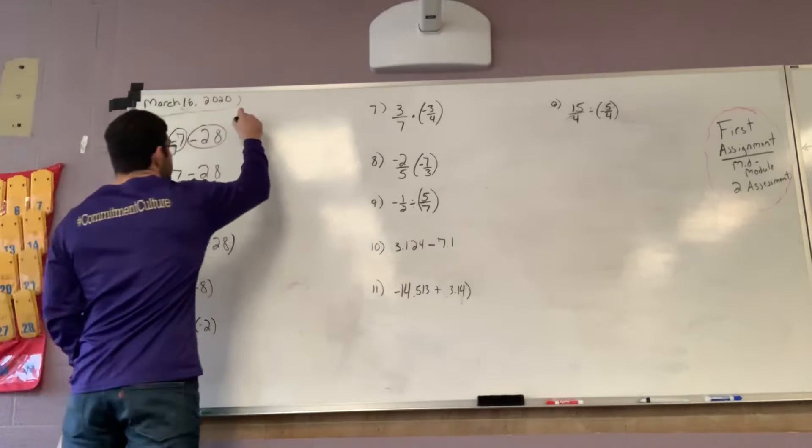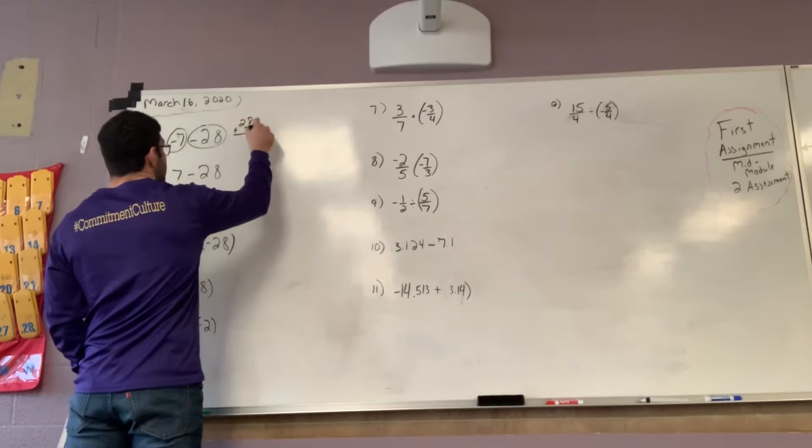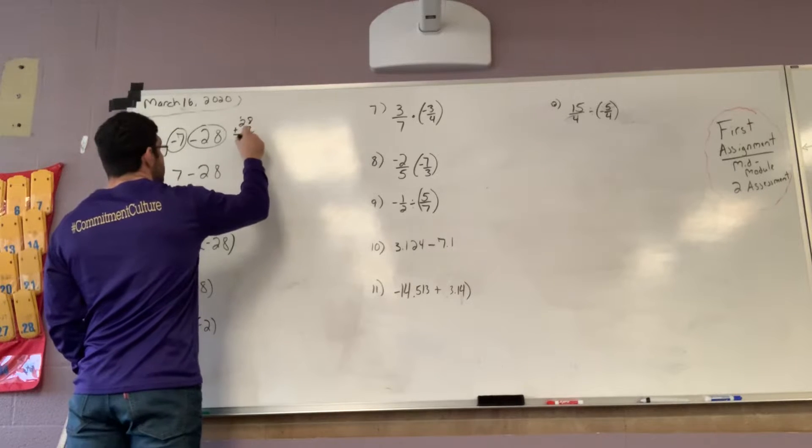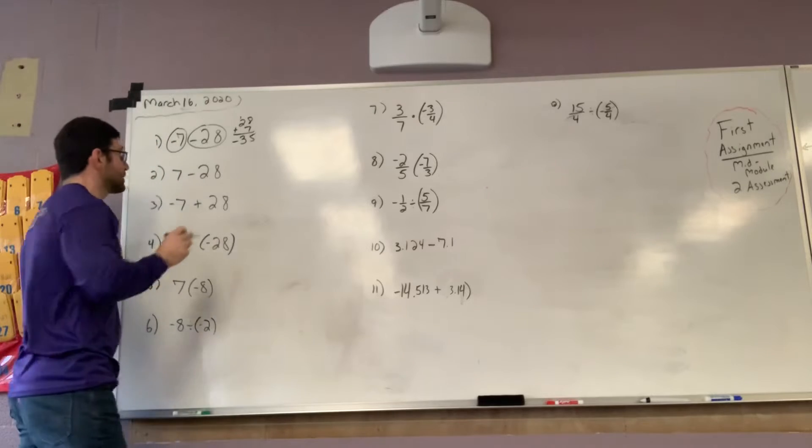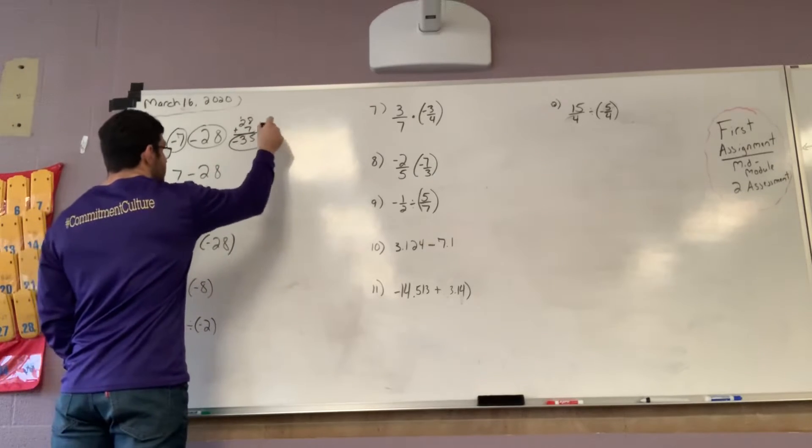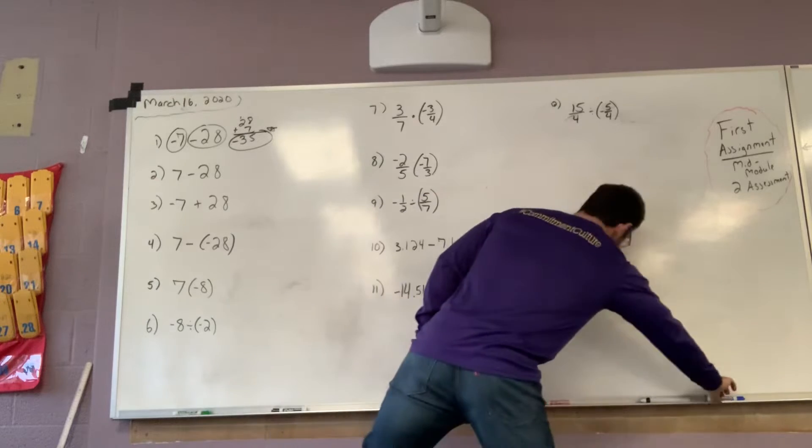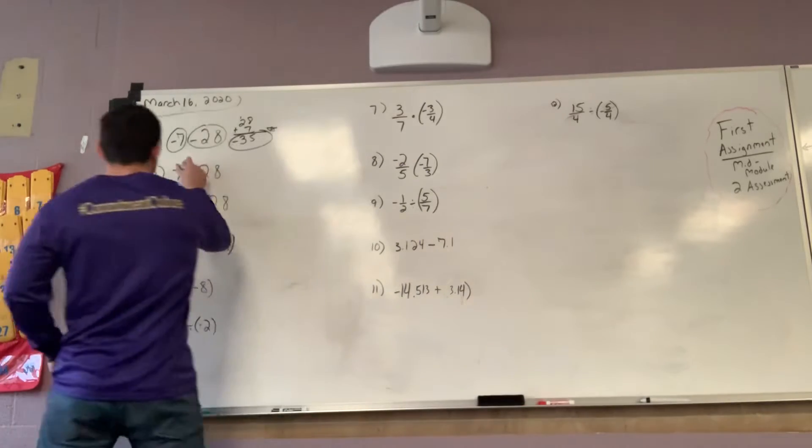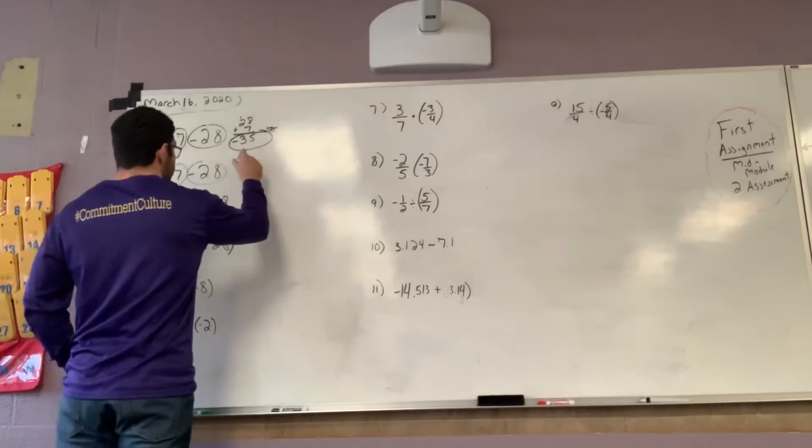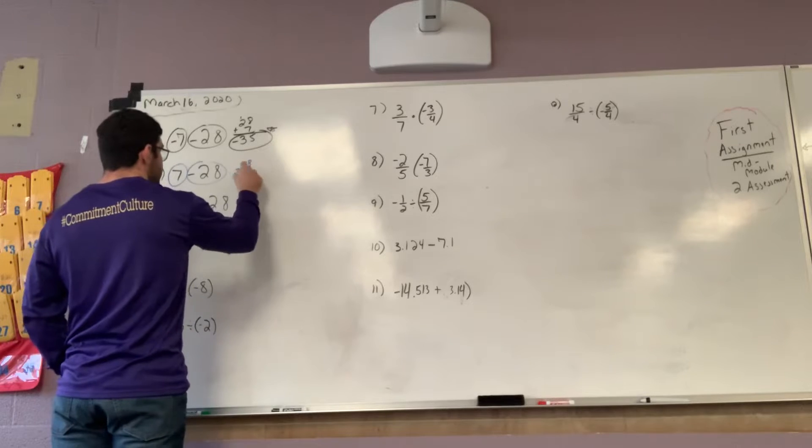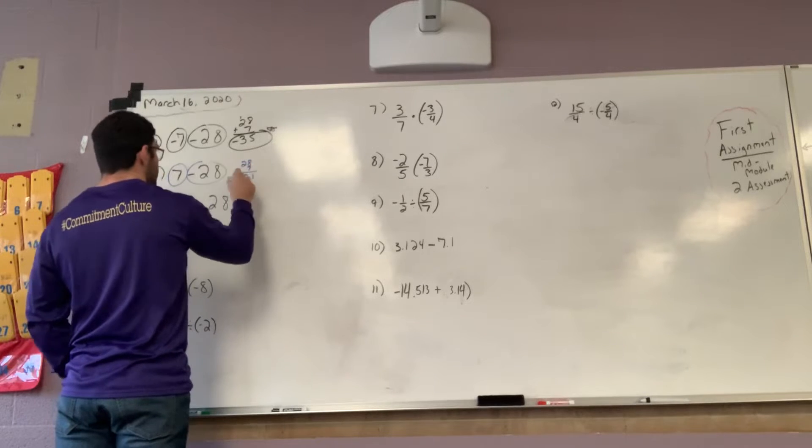Same signs, it means add. 5. Regroup the 1. Keep the original sign. So let's do this work in a different color. Different signs subtract. 28 minus 7 gives me 21. Larger sign is negative.